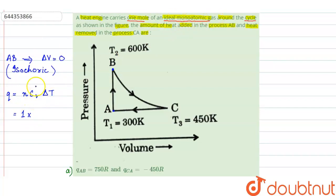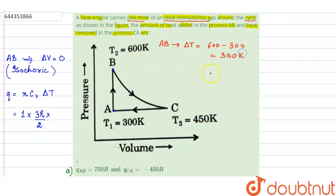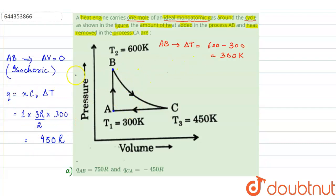For a monoatomic gas, Cv equals 3R/2. Now we check the change in temperature for the AB process: at A, temperature is 300 K, and at B, temperature is 600 K, so delta T equals 600 minus 300 equals 300 K. Therefore, the heat exchange equals 1 × (3R/2) × 300 = 450R. This is positive, meaning heat is added in process AB.